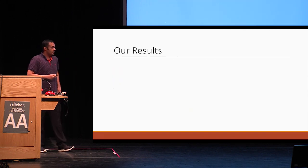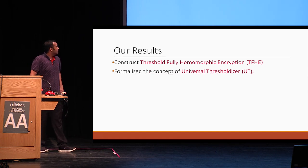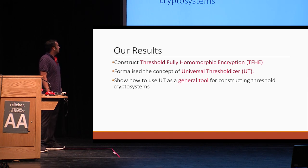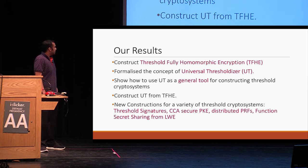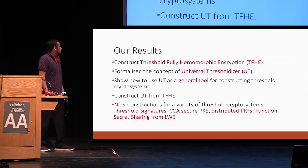Let me summarize our results. We construct threshold FHE. Then we formalize this notion of universal thresholdizer. Then we show that we can use this universal thresholdizer as a general tool to construct threshold cryptosystems. And then we construct this universal thresholdizer from threshold FHE. This immediately gives rise to all sorts of threshold cryptosystems such as threshold signatures, CCA-secure PKE, distributed PRFs, function secret sharing — all from LWE. And many of these notions were not known to construct from LWE before.